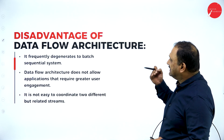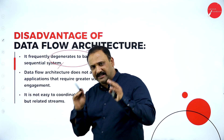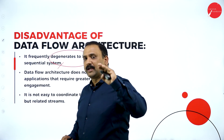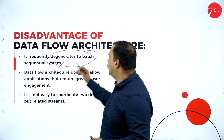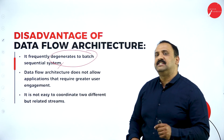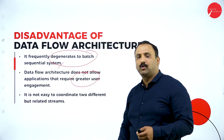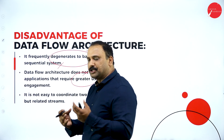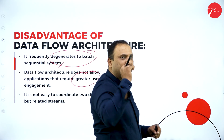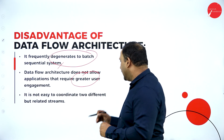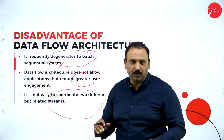The disadvantage of data flow architecture is that it frequently degenerates to a batch sequential system. If a client is looking for multiple levels of faster outputs, that will get affected because this is a sequential generation — time consumption is higher. This does not allow applications with greater user engagement, since this is only about one stream flow. The engagement level for a user is on the lower side, and it's not easy to coordinate two related streams.